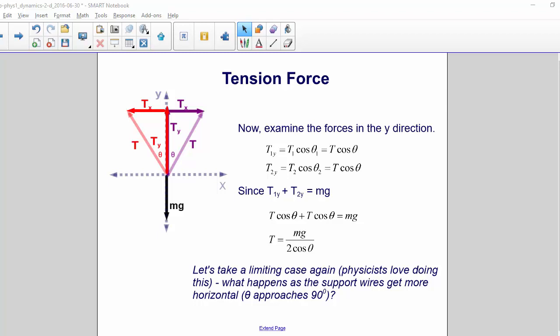And if we solve for T, we get T equals Mg divided by 2 cos theta. So again, if we take a limiting case,